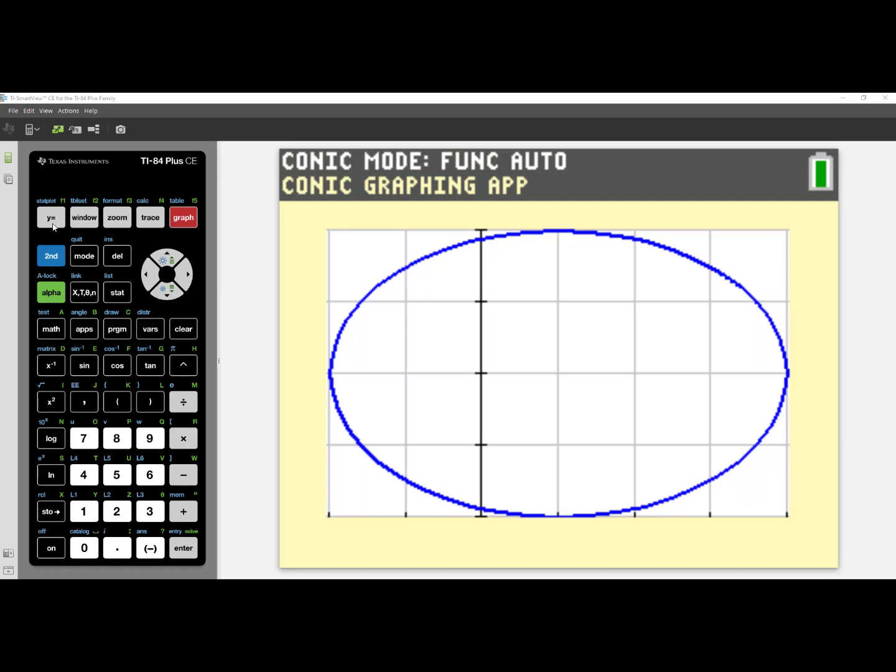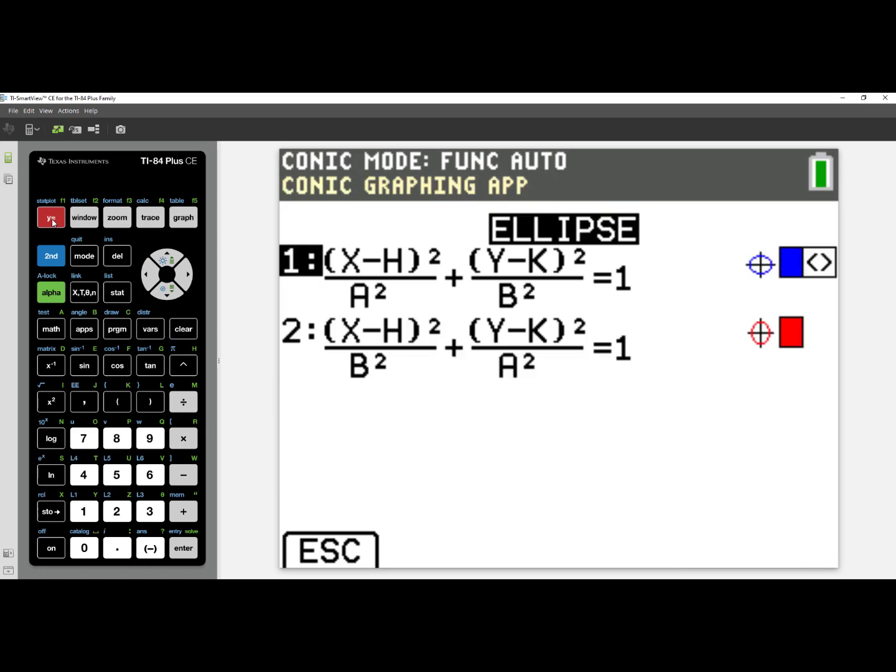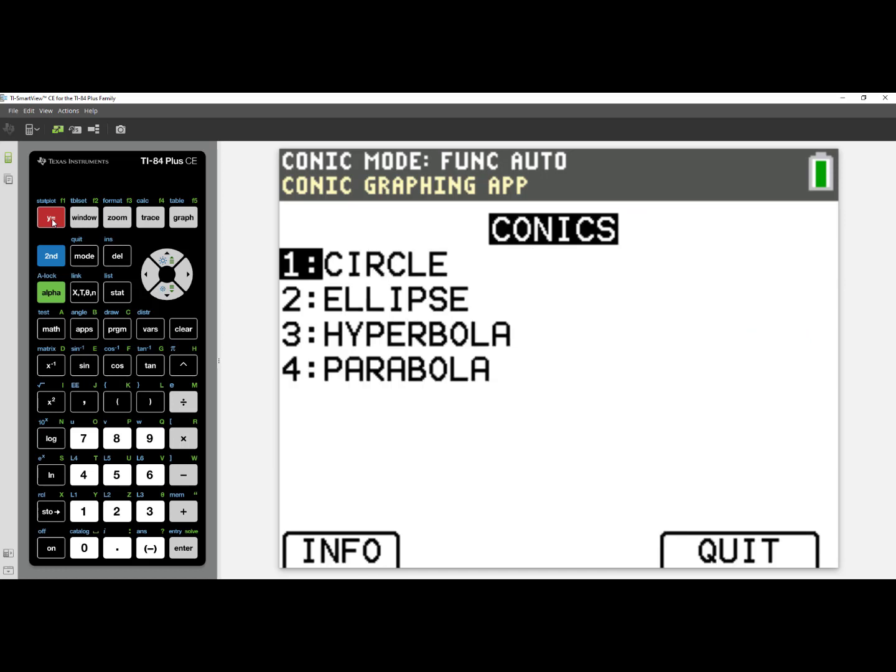I can get out of this graph screen by pressing y equals. I'm taken to my ellipse formula, where I can change the values. Pressing y equals, which is associated with escape, takes me back to my ellipse previous menu, and y equals, again, takes me back to my conics menu.